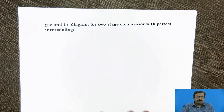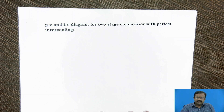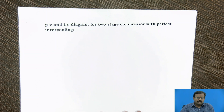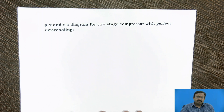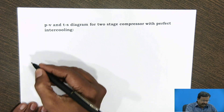Why should we go for multi-staging? We have already studied that in a single-stage compression, if you go for a high pressure ratio, the temperature at the end of compression is very large. If the temperature is large, specific volume is more, and because of that the mass flow rate of compression is affected and volumetric efficiency decreases drastically. So instead, we go for multi-staging, and multi-staging with intercooling is essential. Let us see this in detail with the PV diagram.